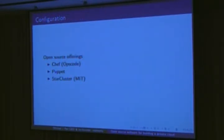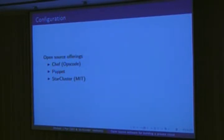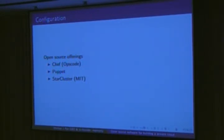Open source offerings for configuration management include Chef, which is owned by OpsCode, and Puppet, which is owned by Puppet Labs. MIT has also created a really easy-to-use one called Star Cluster — I was just at MIT last week. Puppet and Chef are both startups, and Puppet is actually doing really well — they just got $5 million in funding the other day.